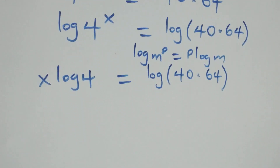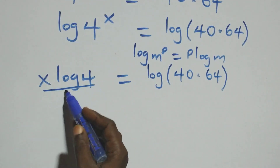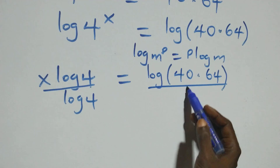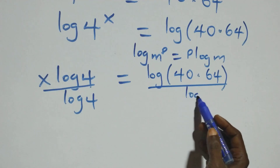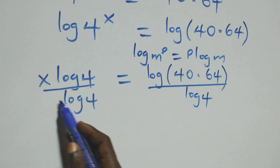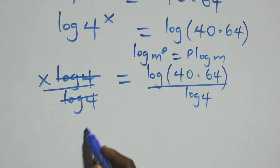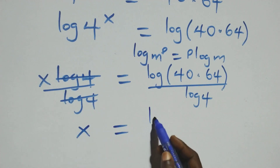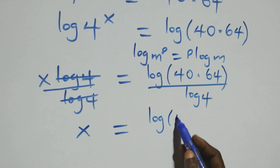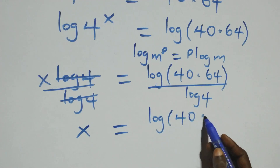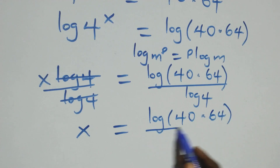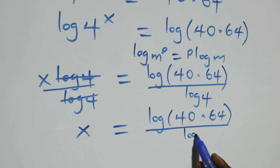We divide both sides by log 4. On the left side we divide by log 4, and also on the right side we divide by log 4. The log 4 terms cancel each other, giving us x equals log of 40 times 64 over log 4.